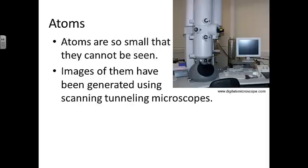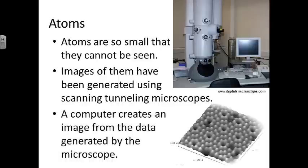Atoms are so small that they cannot be seen. Obviously they didn't use a regular microscope, one using visible light, because visible light cannot give you an image of something that small. Images of them have been generated using scanning tunneling microscopes, such as the one you see here. A computer creates an image from the data generated by the microscope, and you get to see an image of what the surface scan looked like.